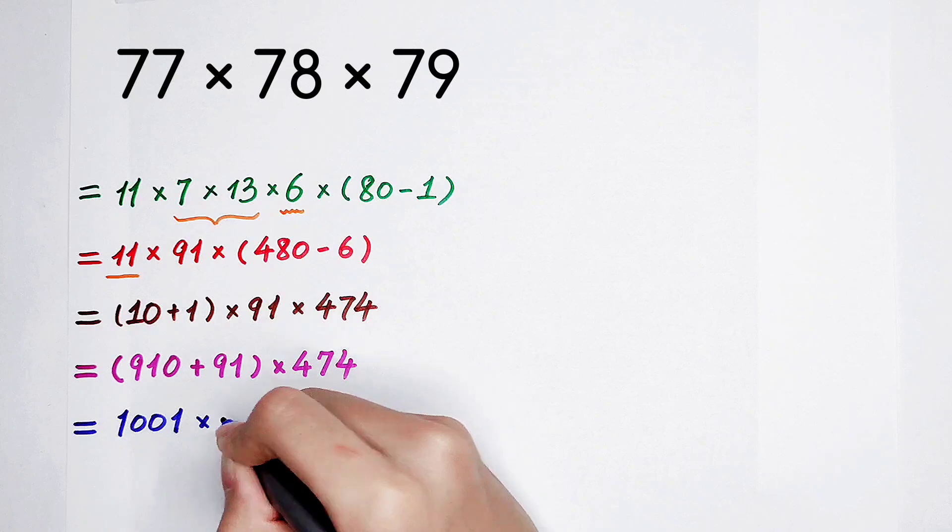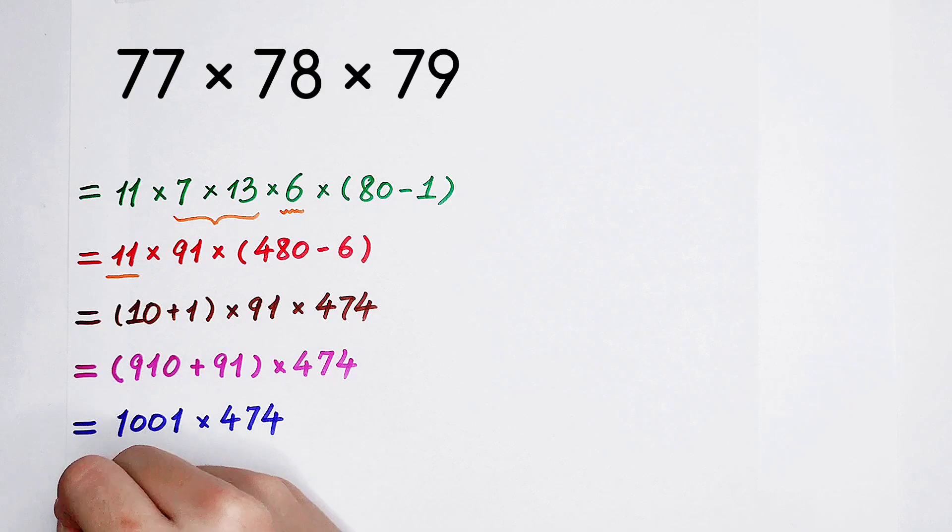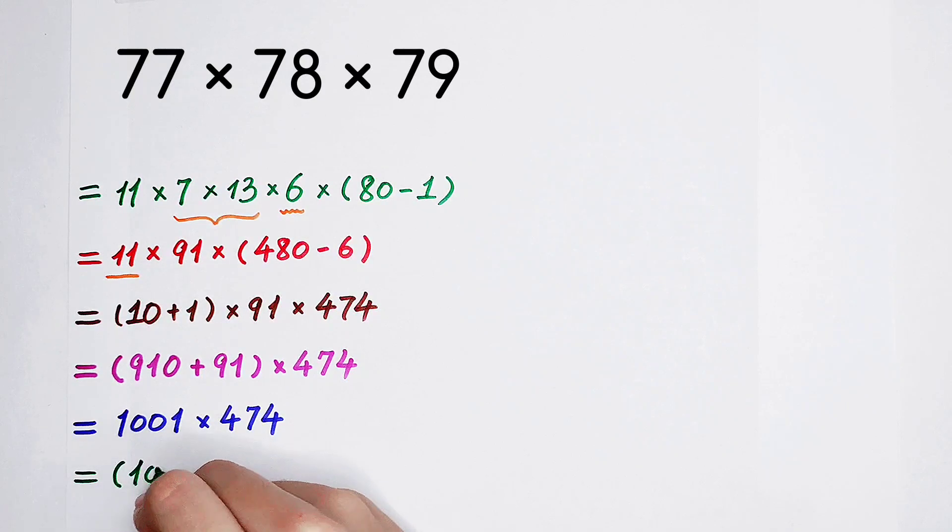And then times 474. Then 1001 is a very lucky number because it can be regarded as 1000, then add 1, times 474.